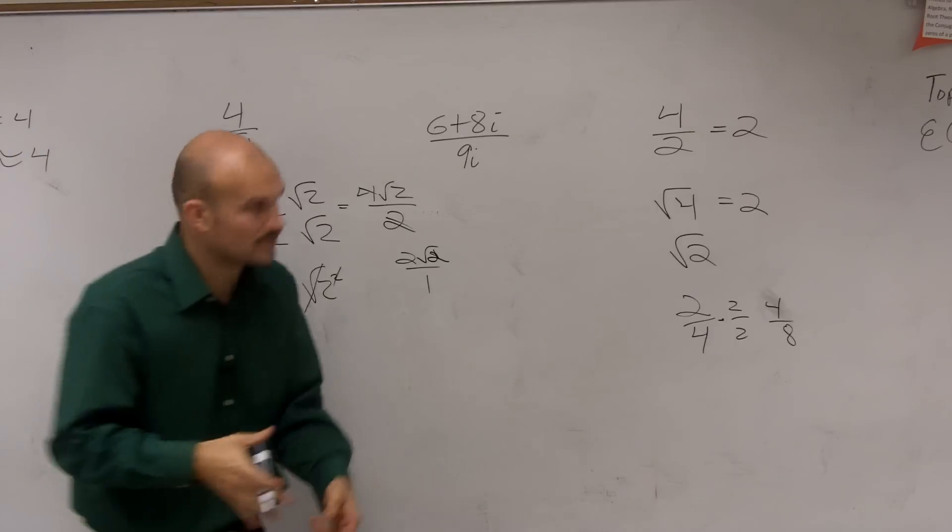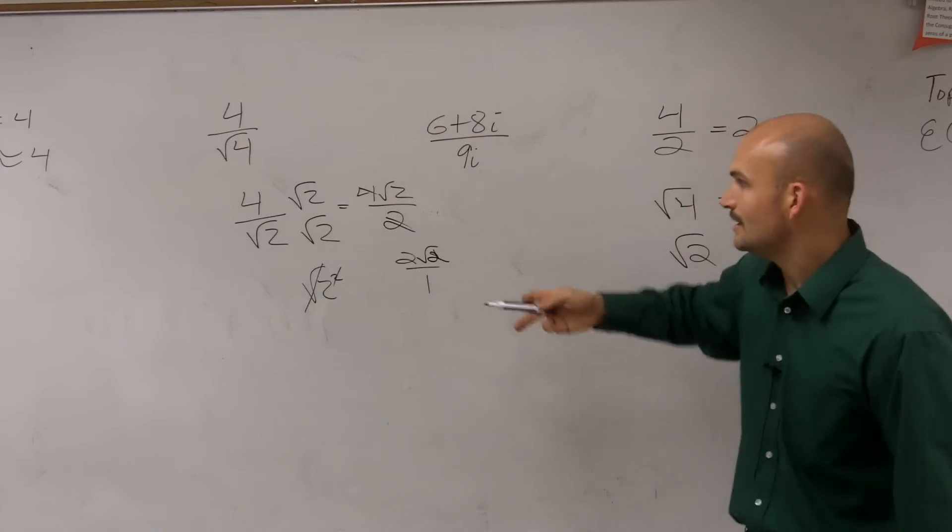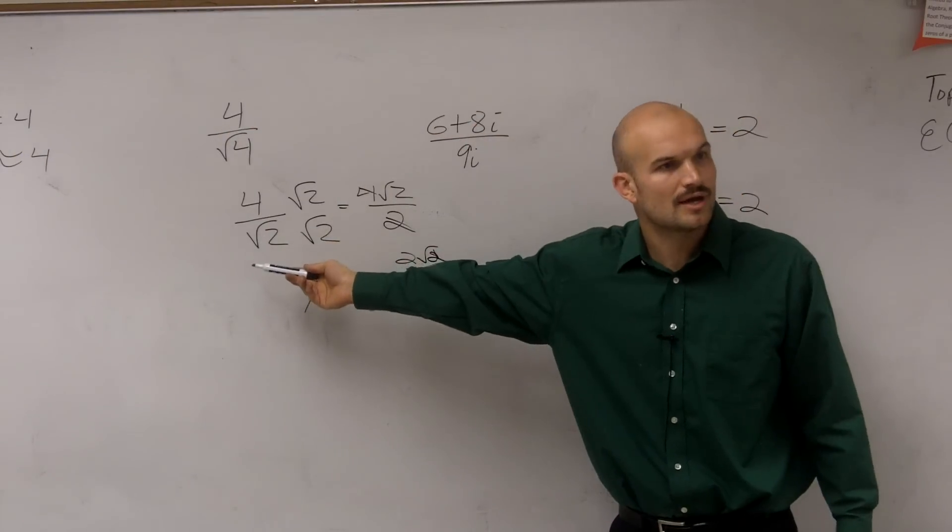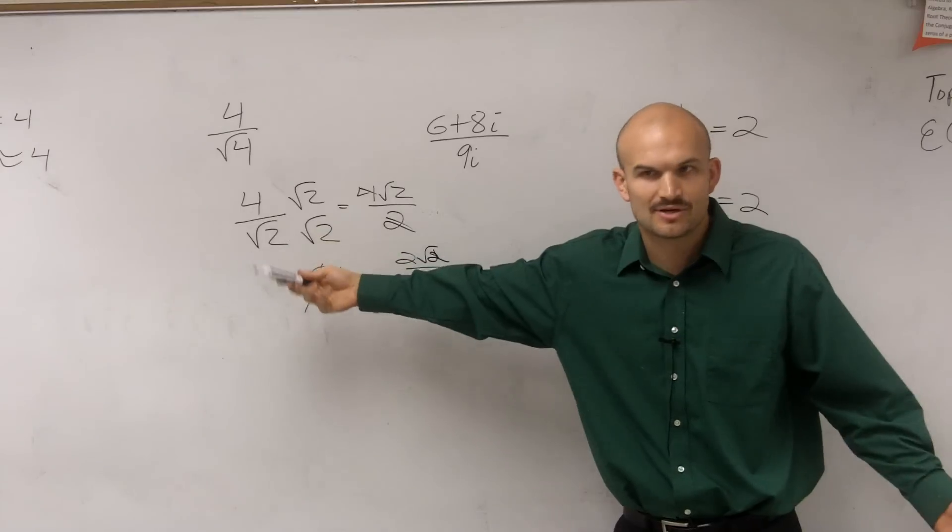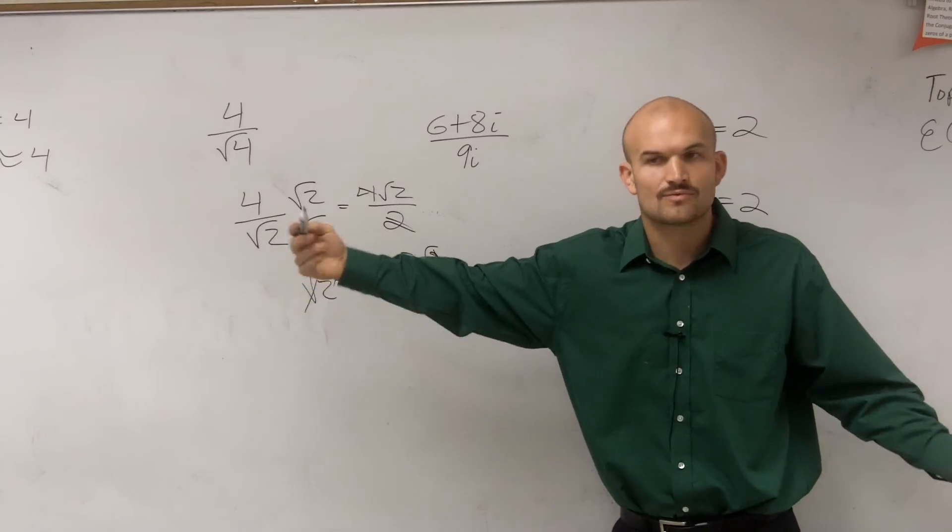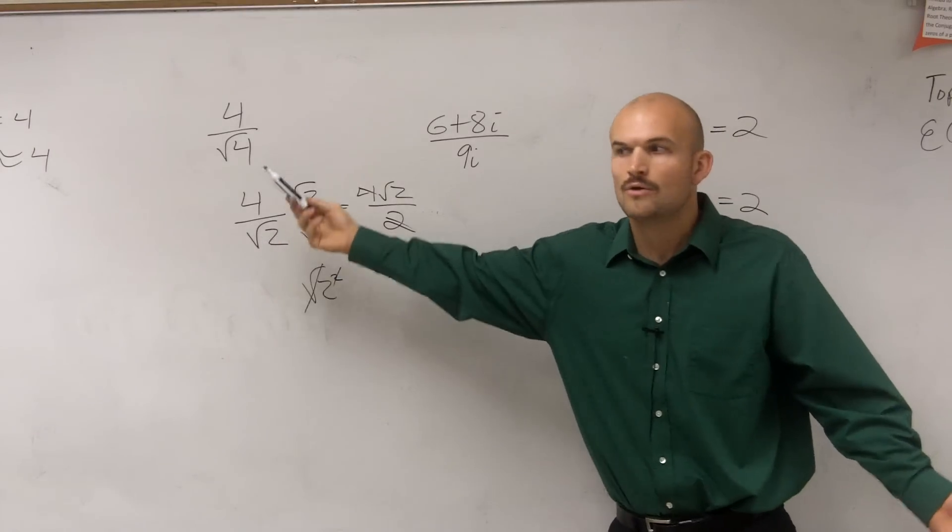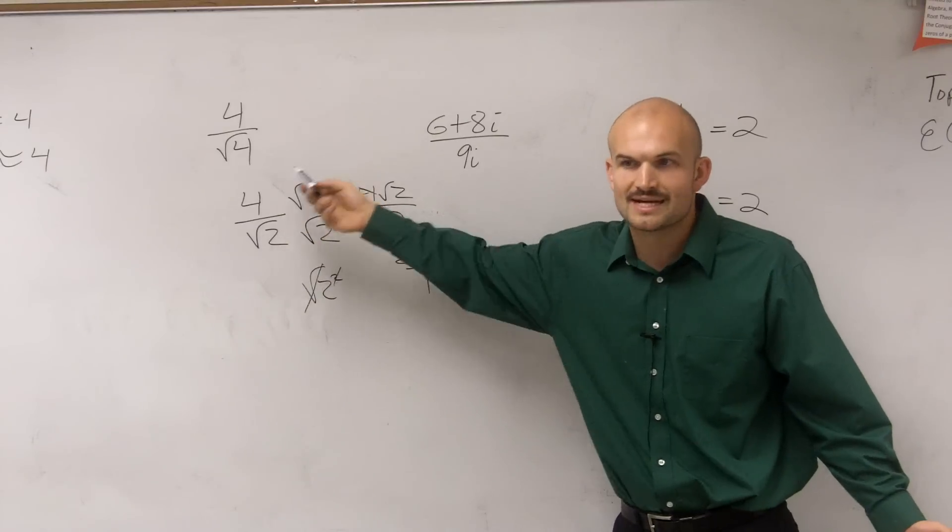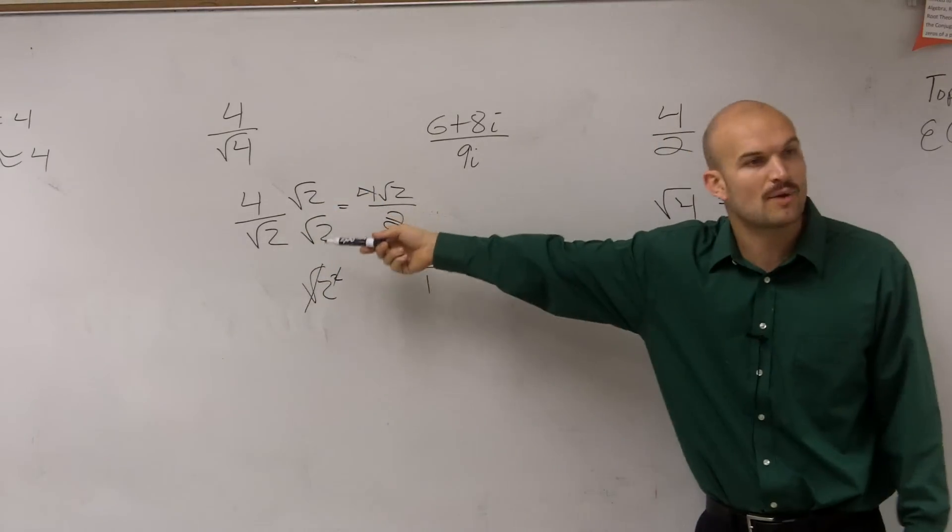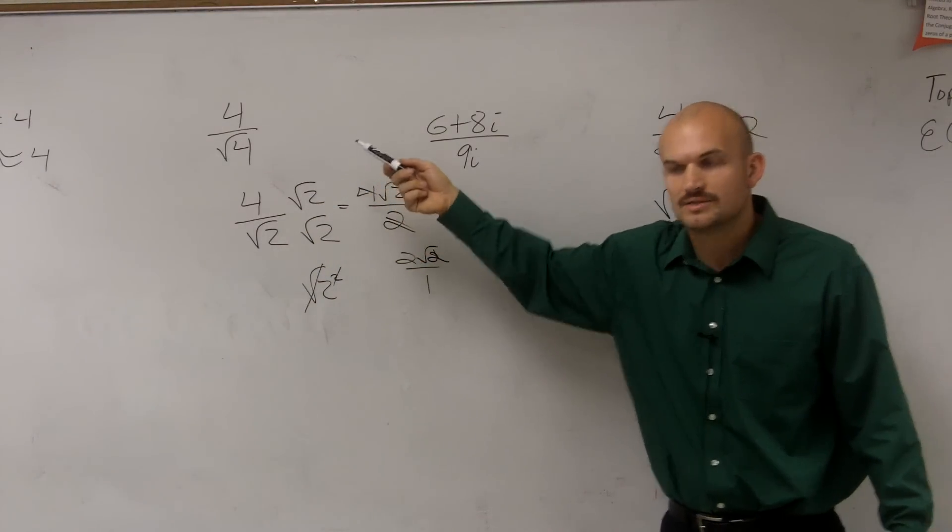But the main important thing I want you guys to understand throughout this whole big talk I've had is you cannot divide by irrational numbers. Well, you can, but you're going to approximate their answer. So rather than getting an approximate answer, what we did is we rationalized the denominator to get our irrational number off of our denominator.